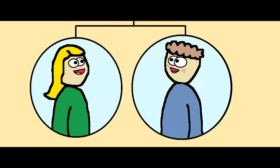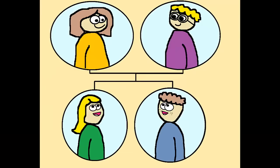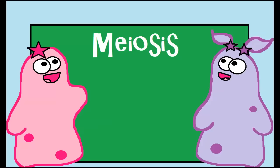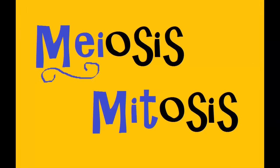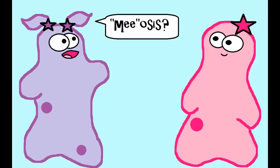Have you ever wondered how two siblings who could have the same mom and dad can still look so different? Today we're going to talk about the process that makes that possible — a process called meiosis. Not to be confused with mitosis, which unfortunately sounds very similar.